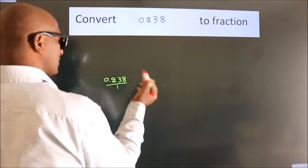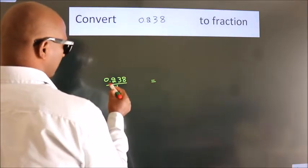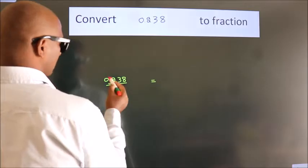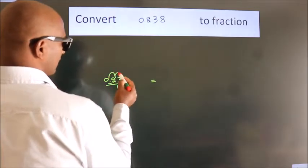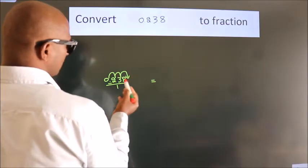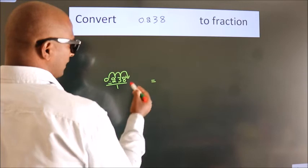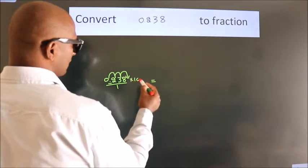To convert this to fraction, we have to move this decimal after 1, 2, 3 numbers. To move this decimal after 3 numbers, we have to multiply it with 1000.